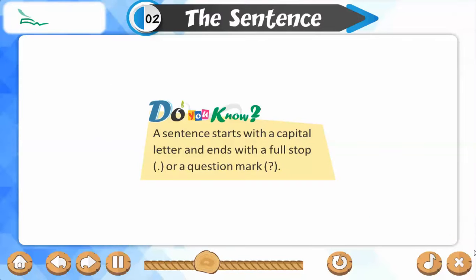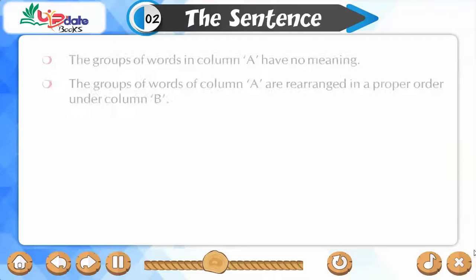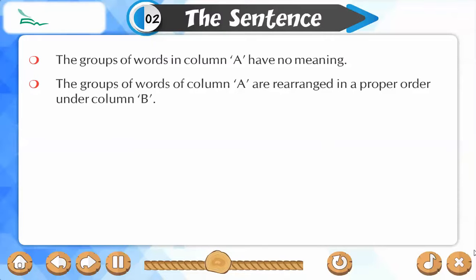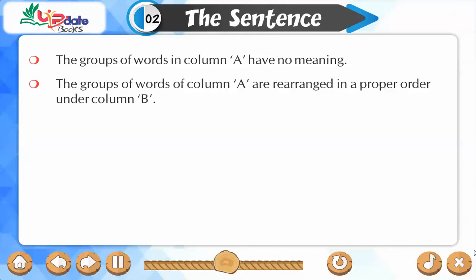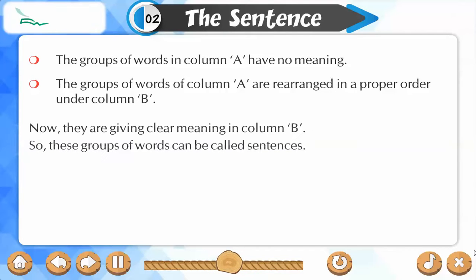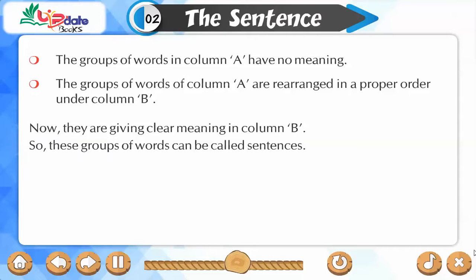Do you know? A sentence starts with a capital letter and ends with a full stop or a question mark. The groups of words in Column A have no meaning. The groups of words of Column A are rearranged in a proper order under Column B. Now they are giving clear meaning in Column B. So these groups of words can be called sentences.